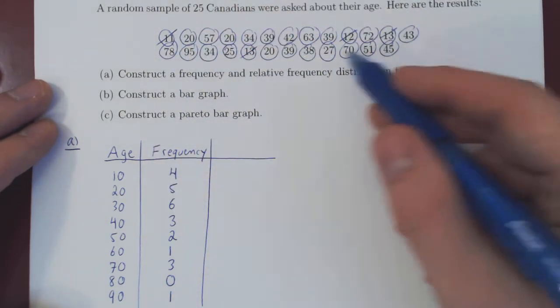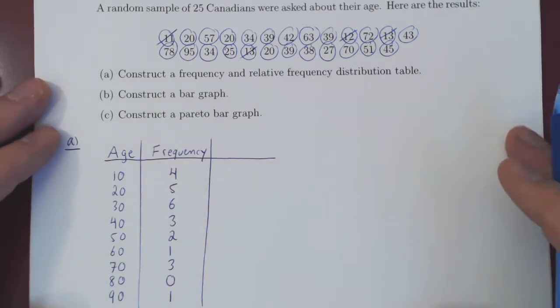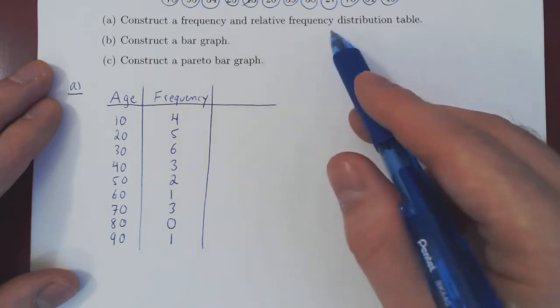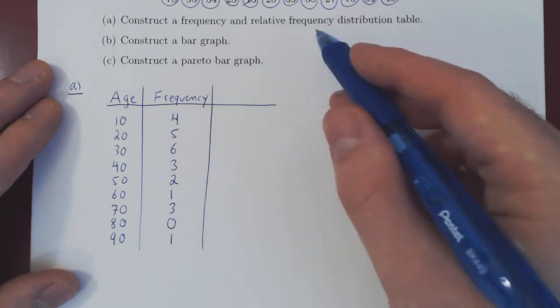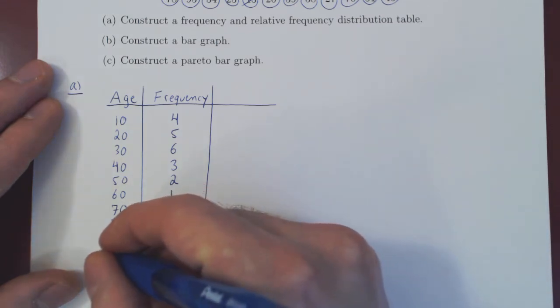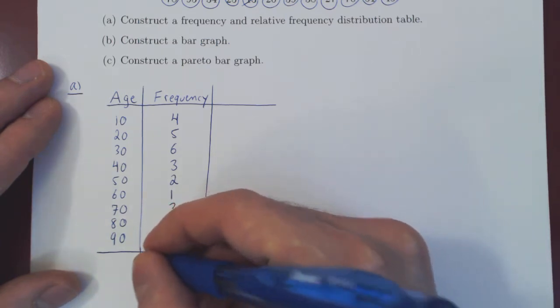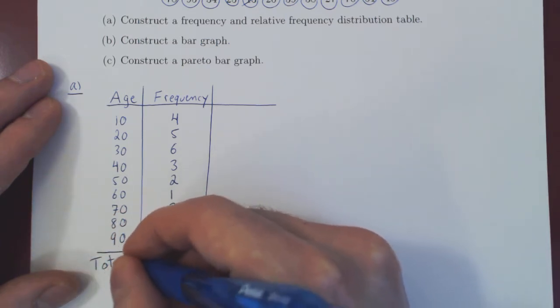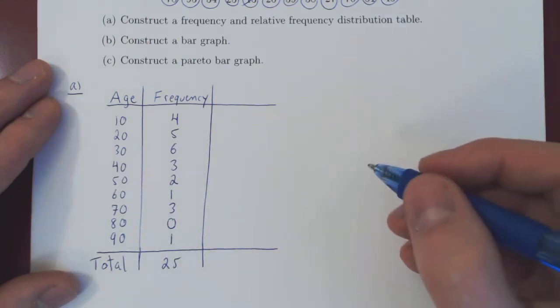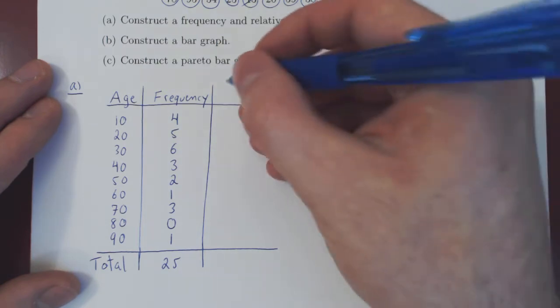We can now ignore all this, the raw data, as now it's arranged in our frequency distribution table. Well, what about the relative frequency? Well, relative means relative to the total sample size. So here, we had a total number of 25 people. And we can add at the bottom our totals. And now for the relative frequency, you can give it in decimals or in percentages. I'll use here percentages.